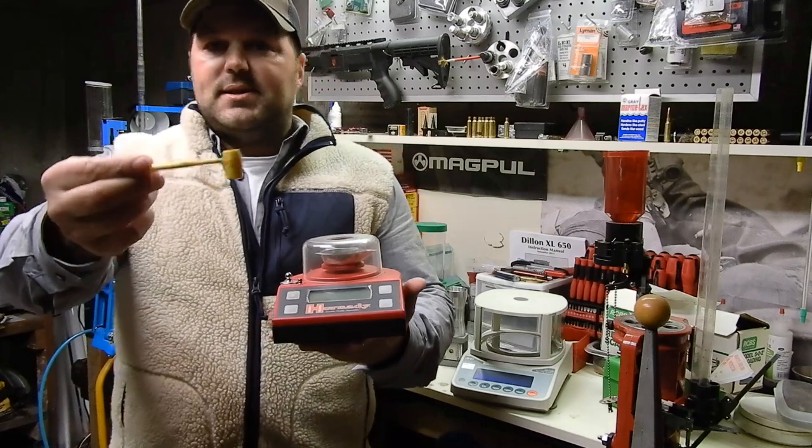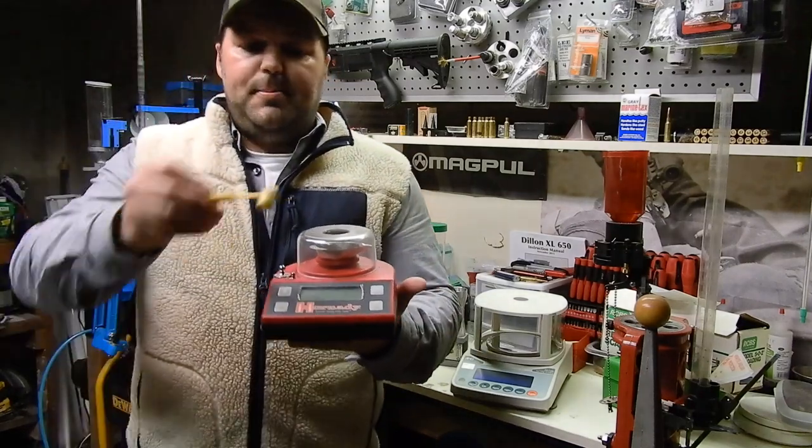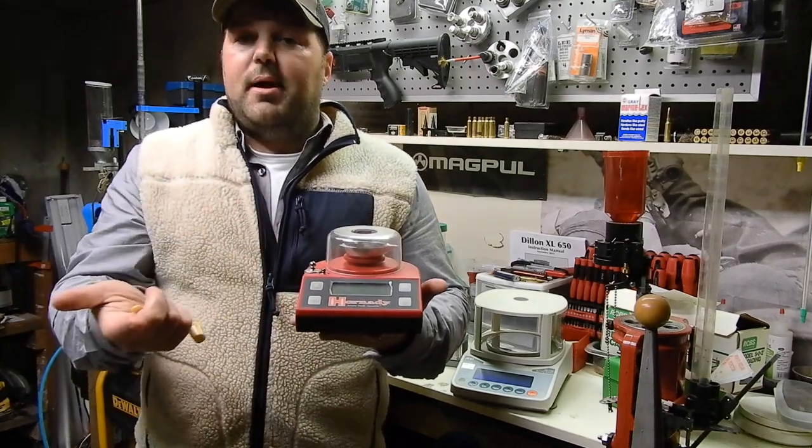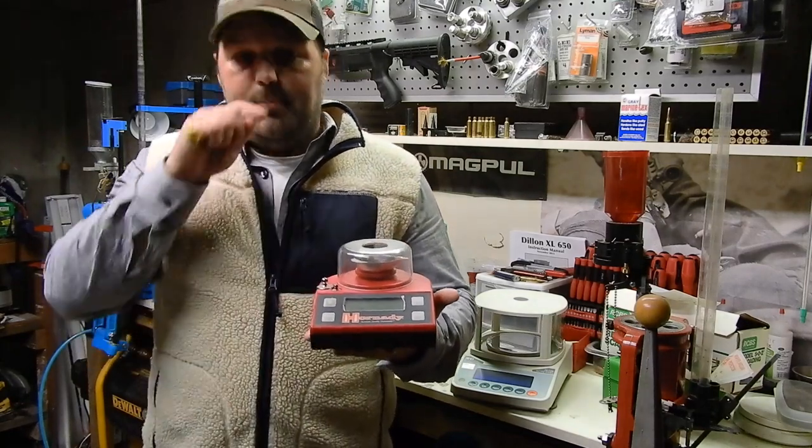The way I had it set up, I bought some of these little lead dippers, dip it in the powder, into the pan, and then I had a trickler and I would just trickle it in until I hit my proper charge weight and then I would dump it.